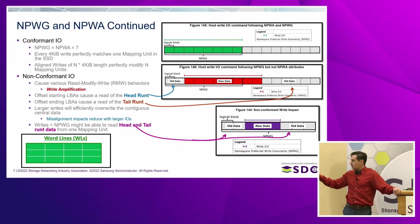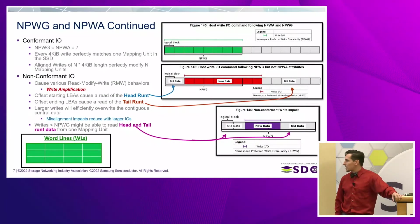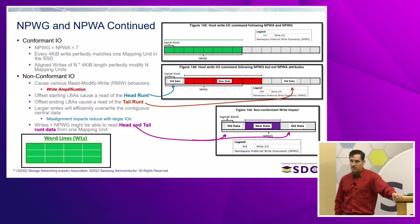That's mostly because we're going to have mapping units staying at 4K in size. Having them equal makes sense. While the spec enables both to be different, we would have to talk about program-in-place memories or something like that in order to move to a separate NPWA and NPWG. The conclusion from NAND parameters is that we have an SSD with a mapping unit of 4K and we want to keep those equal.